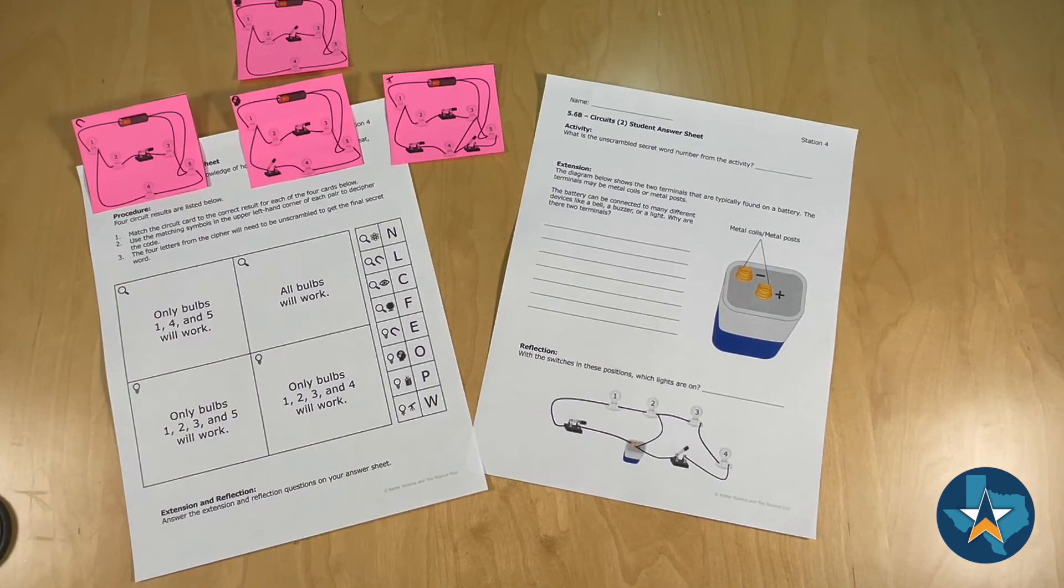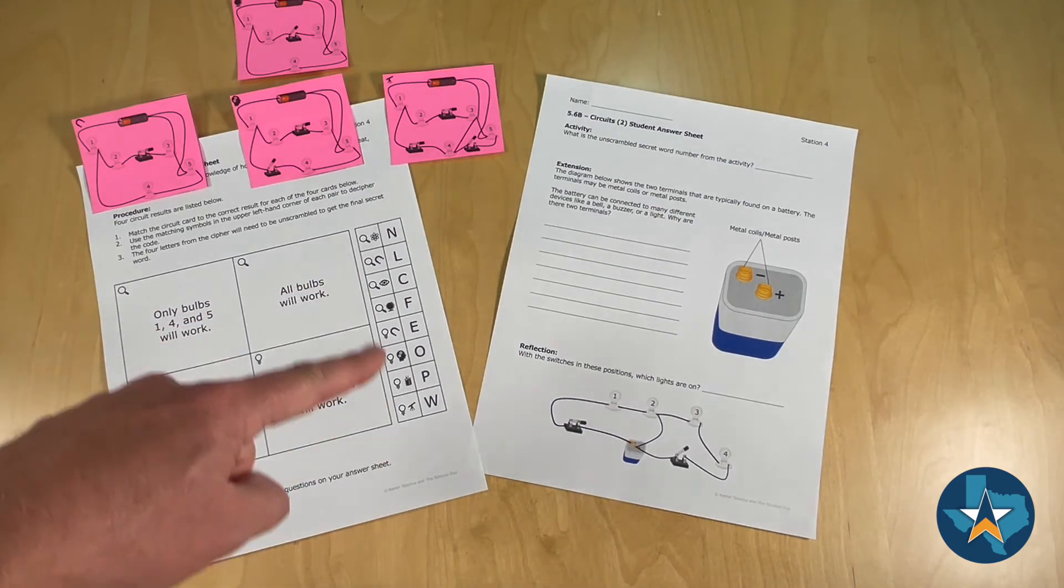Students will be given four circuit cards and they'll have to place them with the correct scenario. The matching icons in the top left corner of the scenario and the circuit cards will reveal a scrambled secret word using the cipher to the right.